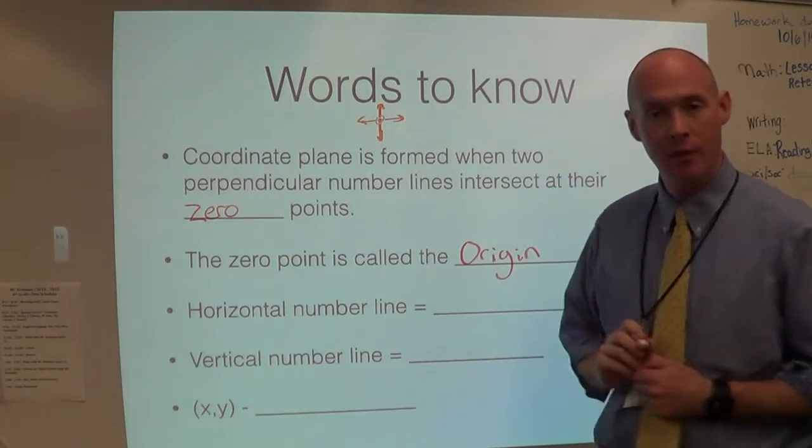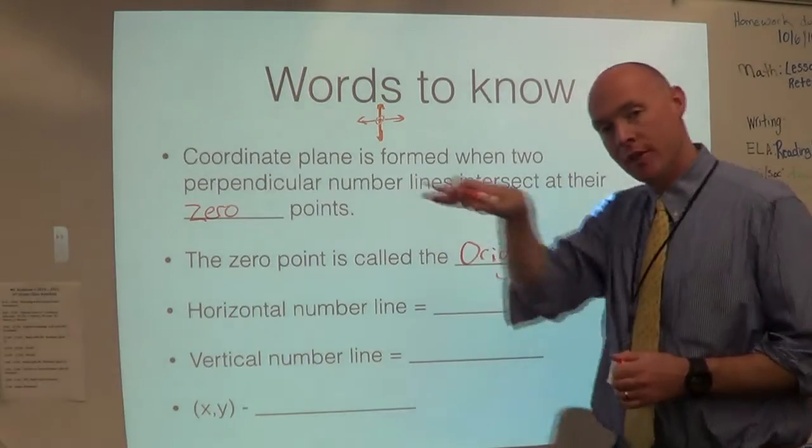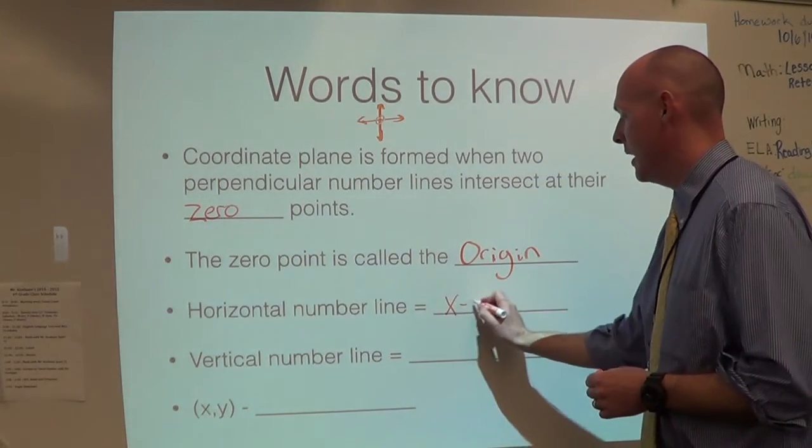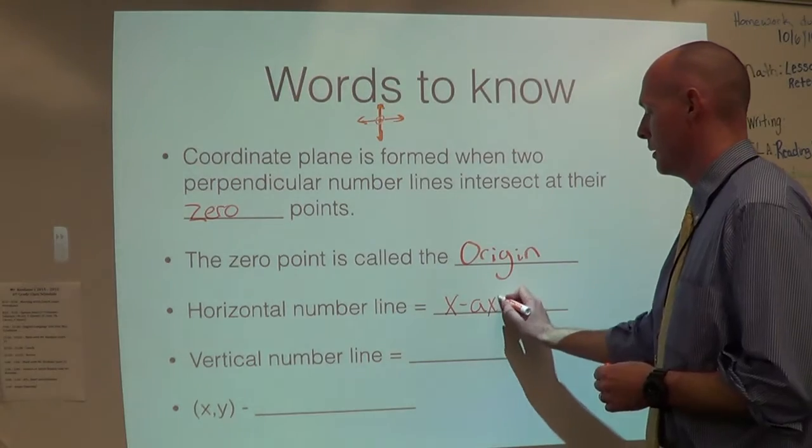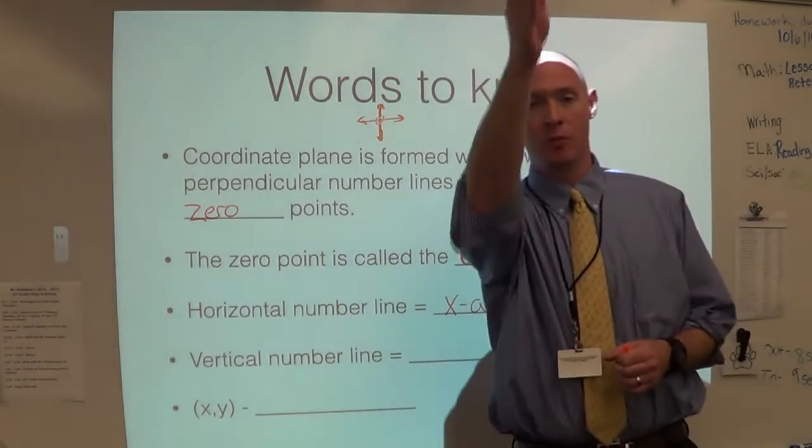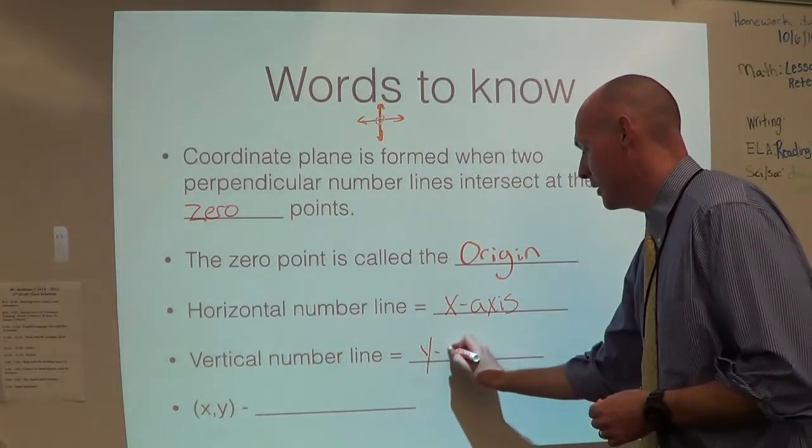So there's my origin right there. The horizontal number line, which is the number line that goes across, that is the x-axis. The vertical number line, which is what goes up and down, that is the y-axis.